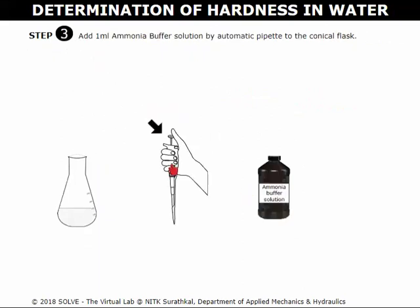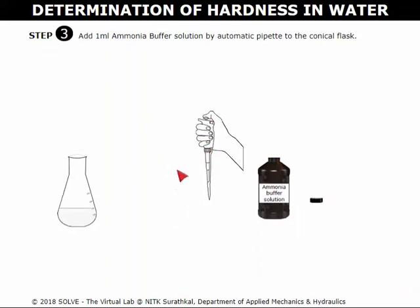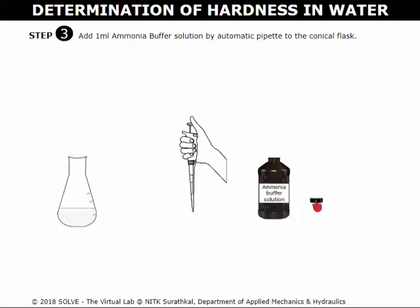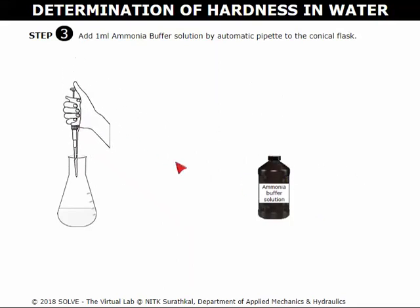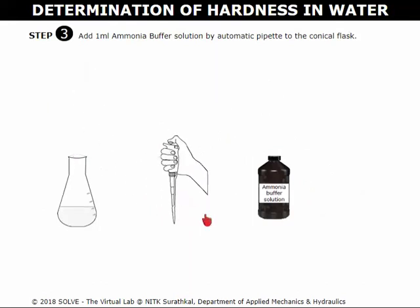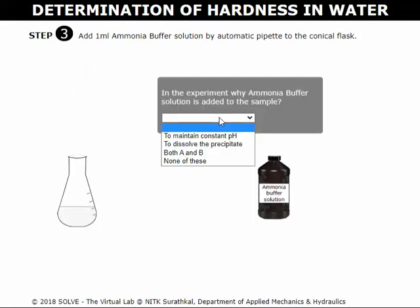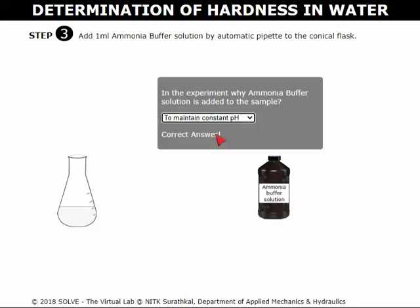Click here on the automatic pipette. Open the lid of ammonia buffer solution. Click on the pipette and pipette 1 ml of buffer solution. Close the lid. Click on the automatic pipette to release the solution into the conical flask. Select the correct answer for this pop-up question to proceed to the next step.